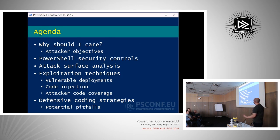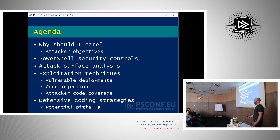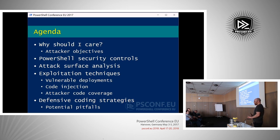First I'll be talking about why should I care. Some of what I'll be talking about is relatively esoteric and it might seem like it's not really applicable to you. But at the end of the day, if the attacker wants to execute something and they have to jump through many esoteric hoops to achieve their objective, they're going to do it, whether you realize it or not. I'll cover what some of those attacker objectives are and how they apply to the PowerShell scenario.